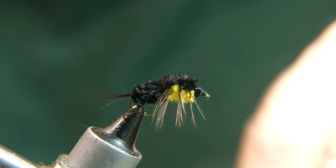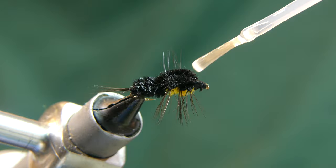Grab your head cement, in this case it's Sally Hansen's, and dab it to the thread. That way it stays nice and secure for you when you're fishing it.